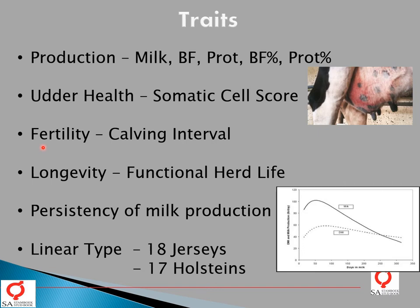In the last few years, traits dealing with functional herd life or longevity have become increasingly important in terms of profitability in dairy herds. It is all to do with voluntary versus involuntary culling. Involuntary culling refers to those animals that cull themselves from the herd due to ill health, low fertility, or other reasons. Longevity breeding values address the problem where animals have a shorter functional herd life.